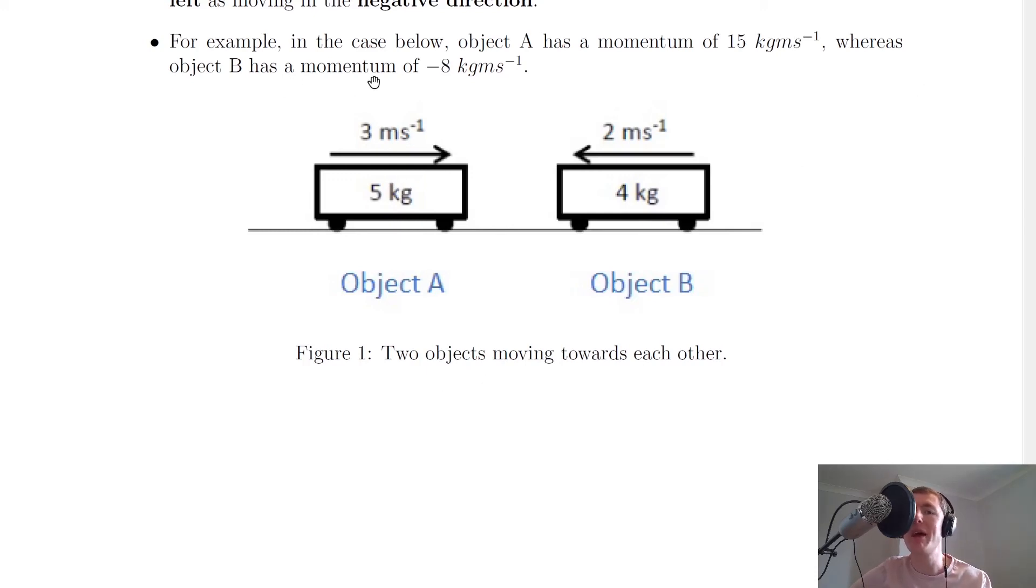Whereas object B has a momentum of minus 8 kilogram meters per second. And we can see that because we've got a mass m of 4 kilograms, a velocity v of 2 meters per second, but this is moving to the left, so it's going to be negative. So that gives us p equals mv is 4 times minus 2, it gives us minus 8 kilogram meters per second.